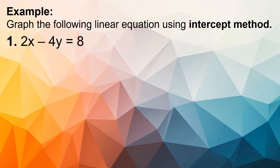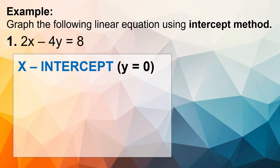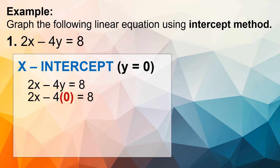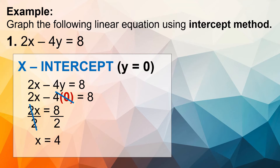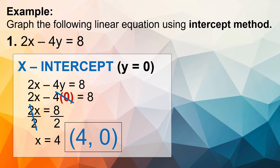Let's have an example. Number 1: 2x minus 4y equals 8. The first step is to find the x and y-intercepts. Let's start with the x-intercept, wherein the value of y must be equal to 0. We will substitute y = 0 into the equation: 2x minus 4 times 0 equals 8. Since 4 times 0 gives us 0, we cancel it out and have 2x equals 8. Dividing both sides by 2 gives us x equals positive 4. So our coordinates will be positive 4 and 0.